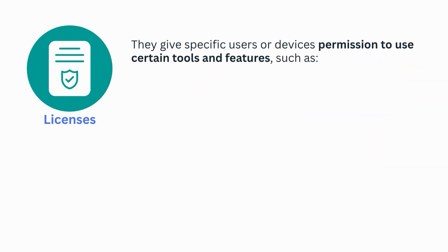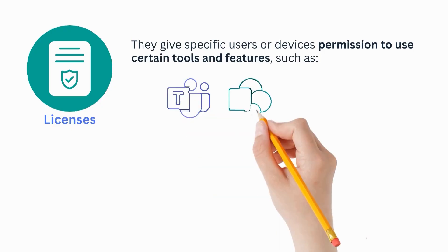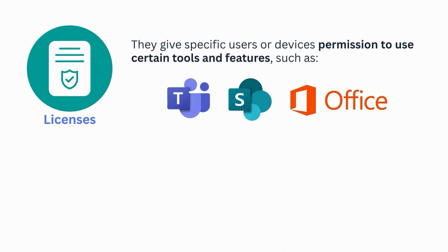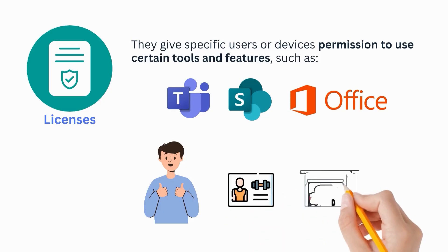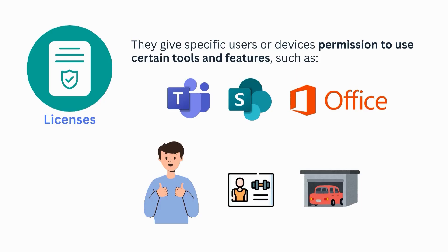Beyond objects, the tenant also manages licenses. Licenses are like access passes within the tenant — they give specific users or devices permission to use certain tools and features such as Teams, SharePoint or Office apps. Think of it like residents in an apartment building having access to amenities based on their lease. In the tenant, licenses ensure every user receives only the tools they need to do their job efficiently, without wasting resources or overpaying for features they don't use.